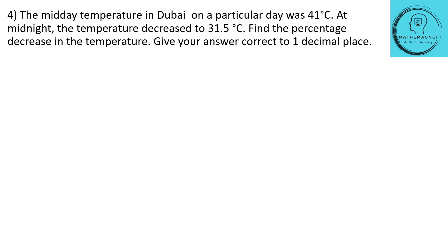Let's look at the next question — question number 4. The midday temperature in Dubai on a particular day was 41 degrees Celsius. At midnight the temperature decreased to 31.5 degrees Celsius. Find the percentage decrease in the temperature. Give your answer correct to one decimal place. We are comparing the temperature on a particular day in Dubai — midday was 41 degrees and at midnight it decreased to 31.5 degrees Celsius.